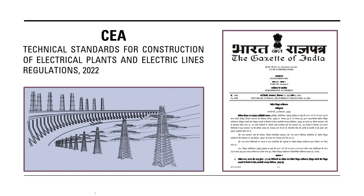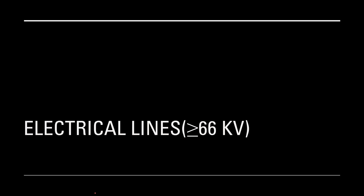In the last video we discussed the technical standard for construction of electrical plants and electric lines regulation 2022, focusing on general requirements for transmission lines, electrical plants, substations and switchyards for 66 kV and above. In this video we will discuss electrical lines, major aspects of thermal power plants, and major aspects of hydropower plants as described in this standard.